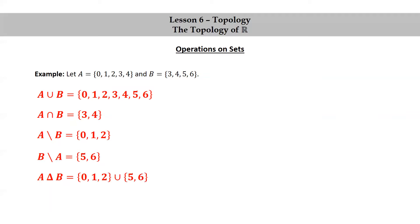And the symmetric difference of A and B is the union of the previous two differences, A minus B union B minus A. So it's the set consisting of 0, 1, and 2 union with the set consisting of 5 and 6, which is the set consisting of 0, 1, 2, 5, and 6.